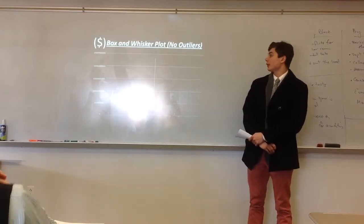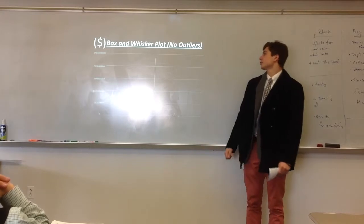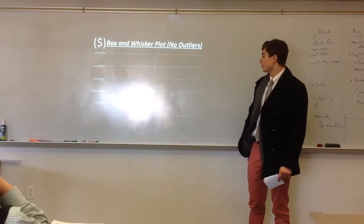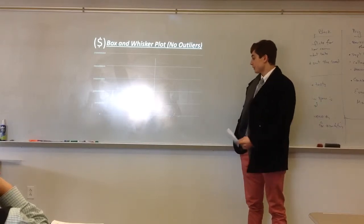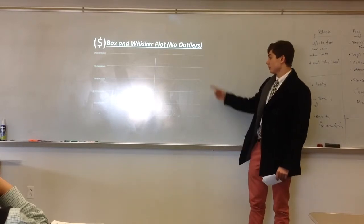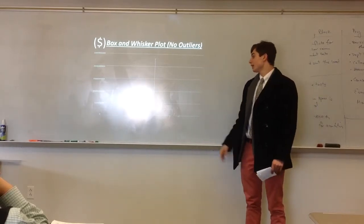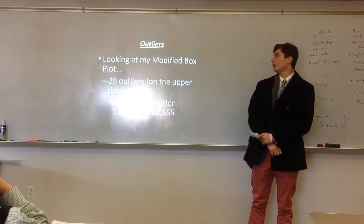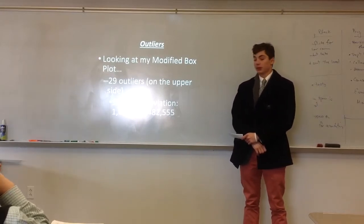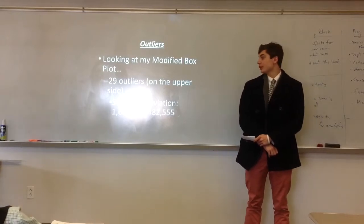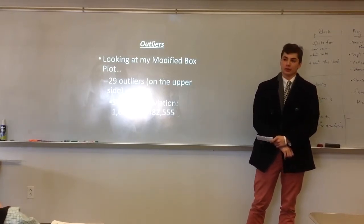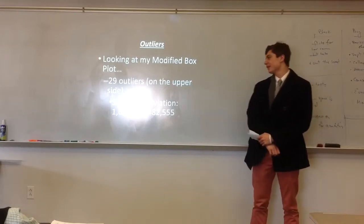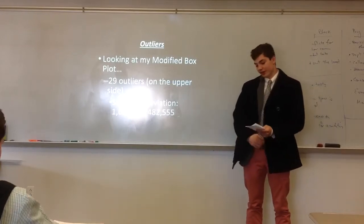Here's my box-and-whisker plot without outliers — you can see it's a lot easier to read. My median is pretty low considering all the numbers I have. It shows that it's right skewed yet again, and my top whisker is fairly high. I have no bottom whisker because my lowest value is zero. Looking at my box plot, there were 29 outliers, all on the upper side — none below. My lower threshold was something like negative one million. And as you can see, my standard deviation is very, very high.